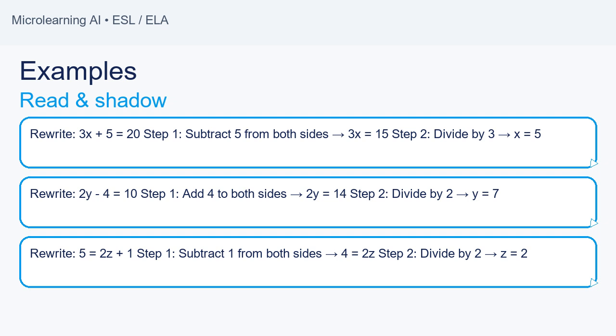Repeat after me. Rewrite: 3x plus 5 equals 20. Step 1: Subtract 5 from both sides. 3x equals 15. Step 2: Divide by 3. x equals 5.